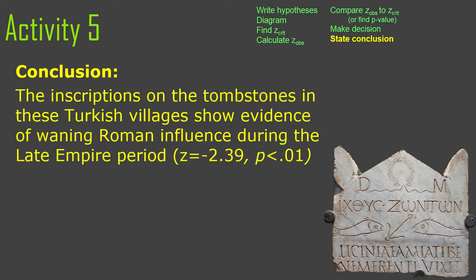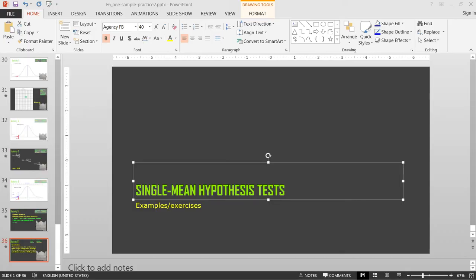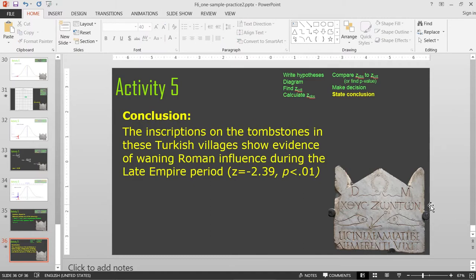In conclusion, the inscriptions show evidence of waning Roman influence. More operationally: there seems to be a lower percentage of Roman pattern inscriptions per cemetery in this region than the standard estimate from the full Roman Empire population during that time period. Z equals negative 2.39, p is less than 0.01. Writing all your variables accurately into conclusion statements is harder than it looks — expect to practice this in homework. We're all done with this set of examples, and the next one will be all about power.